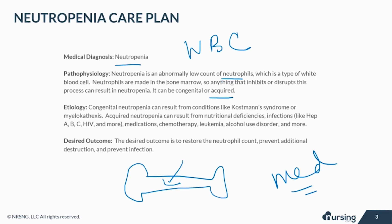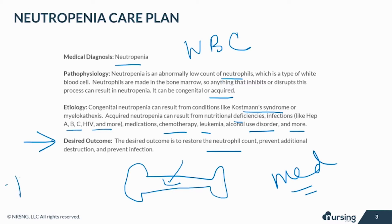Congenital neutropenia can result from conditions like Kostmann's syndrome or myelokathexis. Acquired neutropenia can result from nutritional deficiencies, infections like Hepatitis A, B, C, HIV, and others, by medications, chemotherapy, leukemia, alcohol use disorder, and even more. The desired outcome is to restore the neutrophil count, prevent additional destruction, and prevent infection.